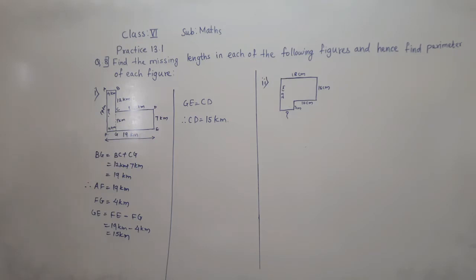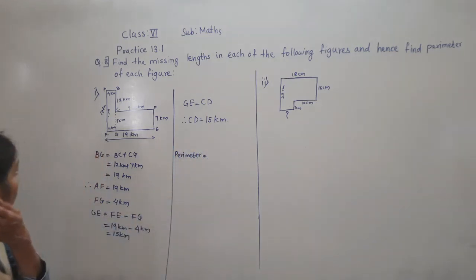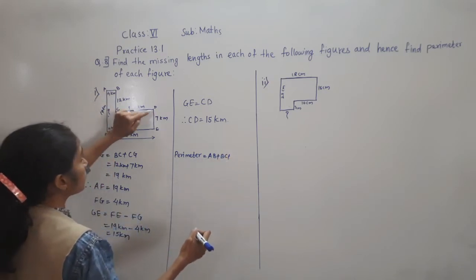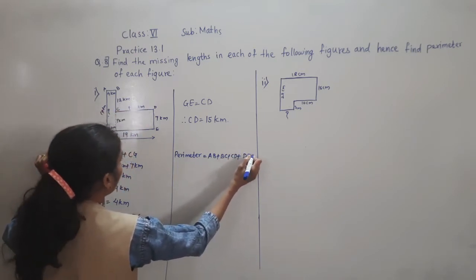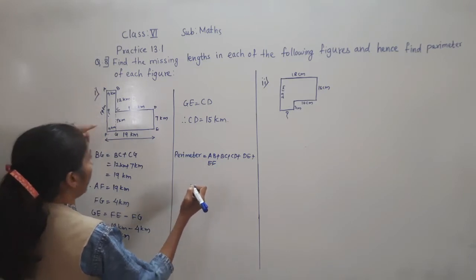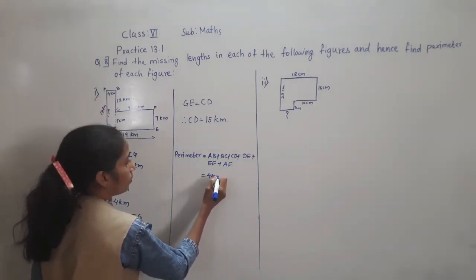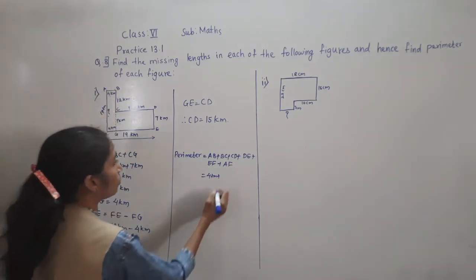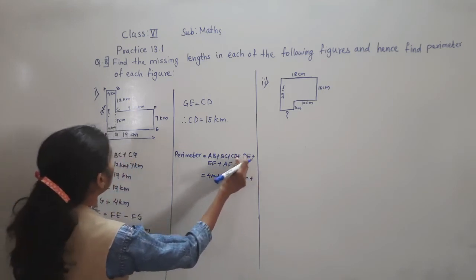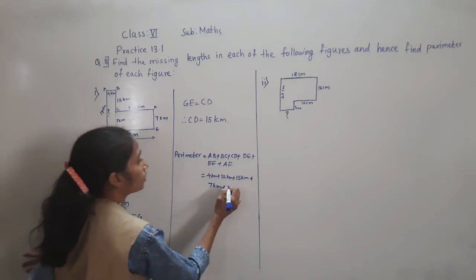Now let's find the perimeter of this figure. Perimeter = AB + BC + CD + DE + EF + AF. AB = 4 km, BC = 12 km, CD = 15 km, DE = 7 km, EF = 19 km, AF = 19 km.